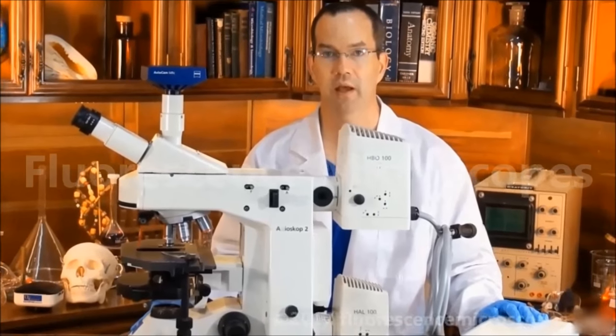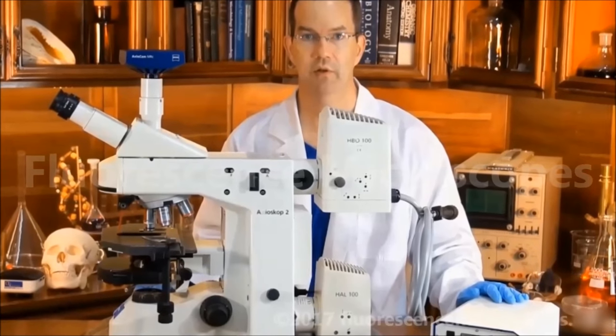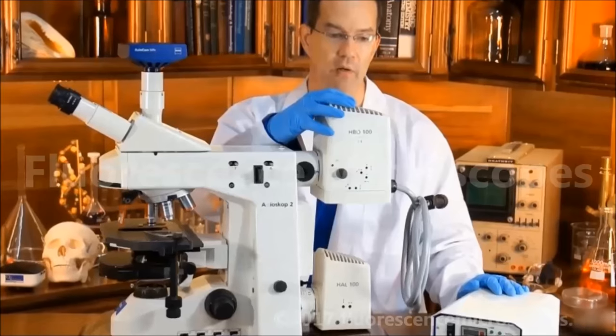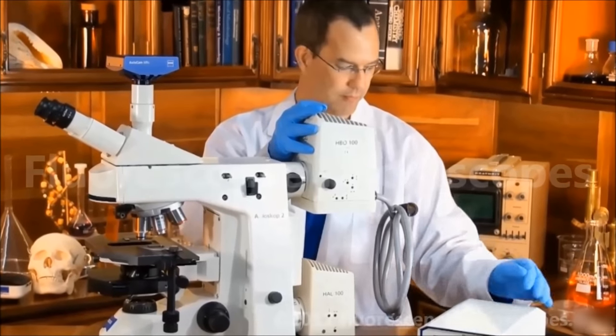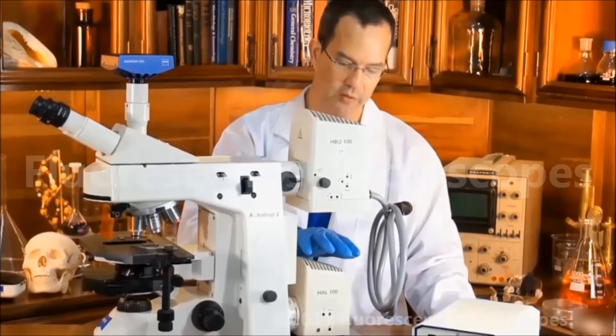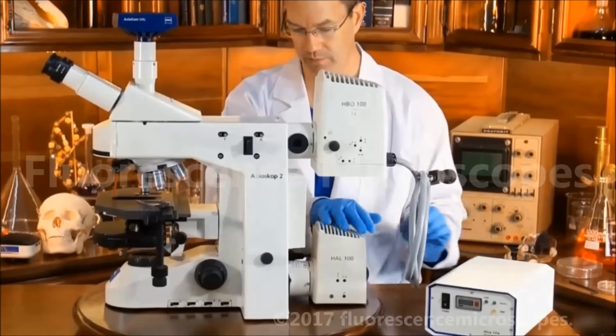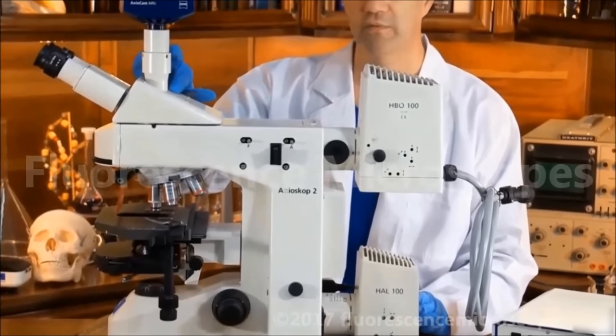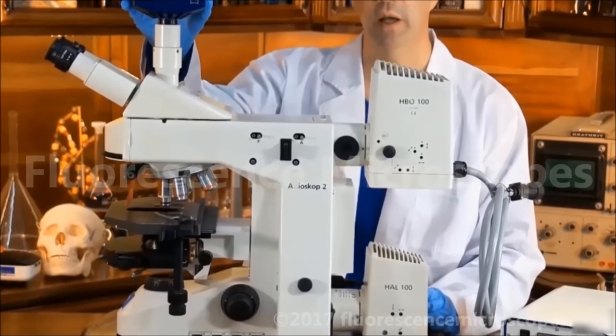This is a Zeiss Axioscope II upright fluorescence microscope. We've configured it with a 100-watt HBO lamp housing with a power supply, a 100-watt halogen transmitted illumination system, and a trinocular head with a photo port and a C-mount with a camera attached.